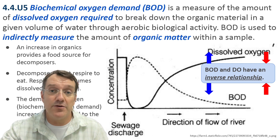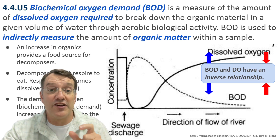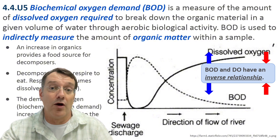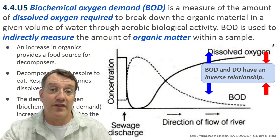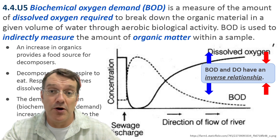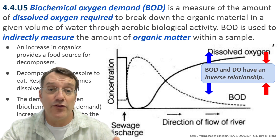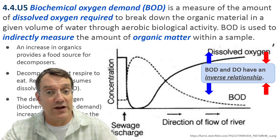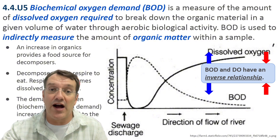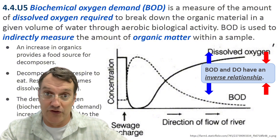In this graph, BOD and dissolved oxygen have an inverse relationship. The higher the demand for oxygen from living things — that's BOD — the lower the amount of dissolved oxygen that remains in the water. When sewage enters a water system, decomposers multiply rapidly to break down the organic matter, and they consume oxygen in the process through respiration. This creates a characteristic pattern where dissolved oxygen levels drop dramatically before gradually recovering downstream.